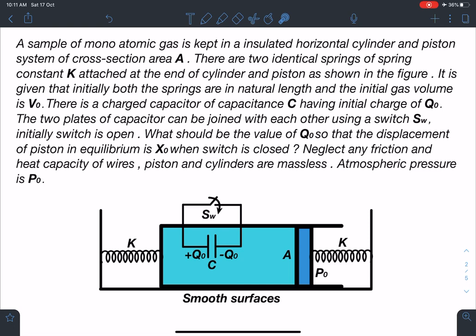Also it is given neglect any friction and heat capacity of wires, piston and cylinders are massless. Atmospheric pressure is P0. So it's a very beautiful problem. Let's discuss this question. What exactly is going to happen when we are going to close this switch? There are conducting wires, there is no mention of resistances, so this capacitor is going to lose all its energy. It will be losing Q0 squared by 2C amount of energy which will come out in the form of heat.